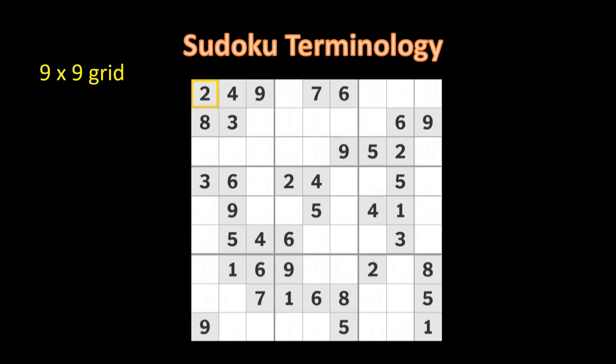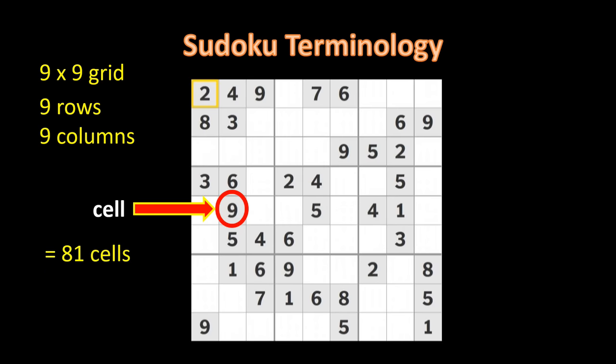Here you can see that a nine by nine grid means that there are nine rows and nine columns. At the intersection of each row and each column, there is a square called a cell. Anyone familiar with Excel spreadsheets will recognize the word cell. Because this is a nine by nine grid, there are 81 squares or cells.